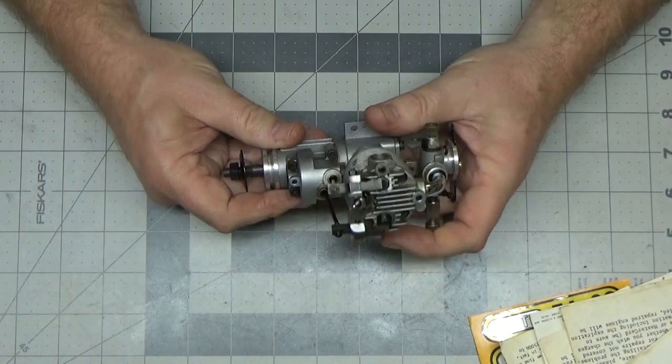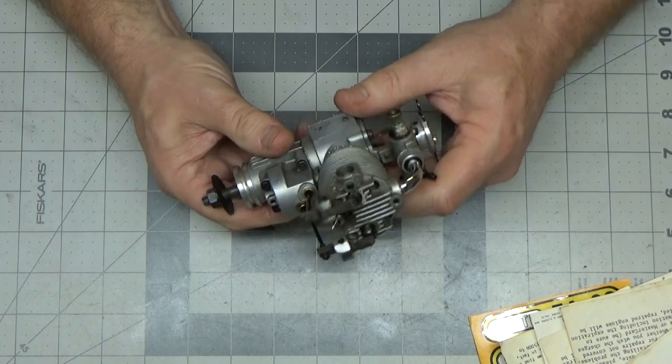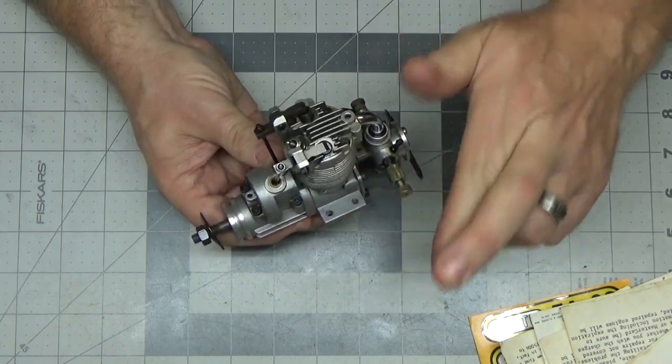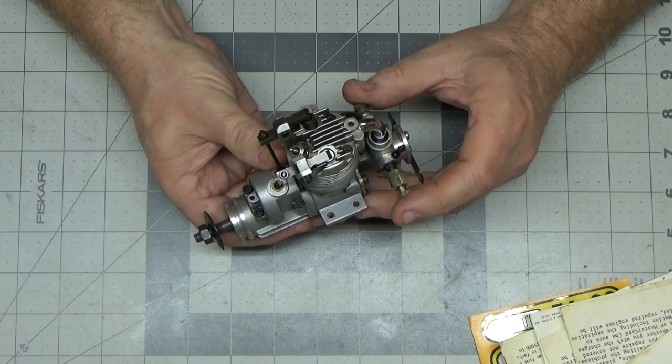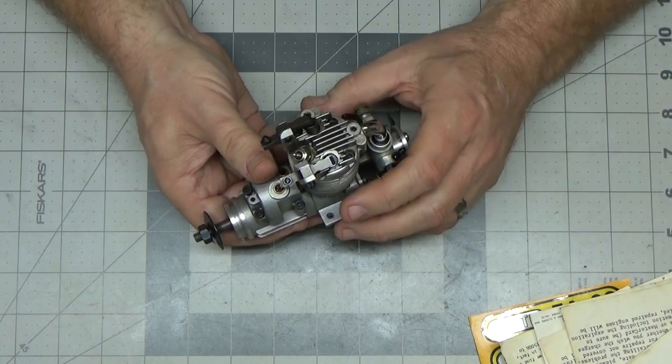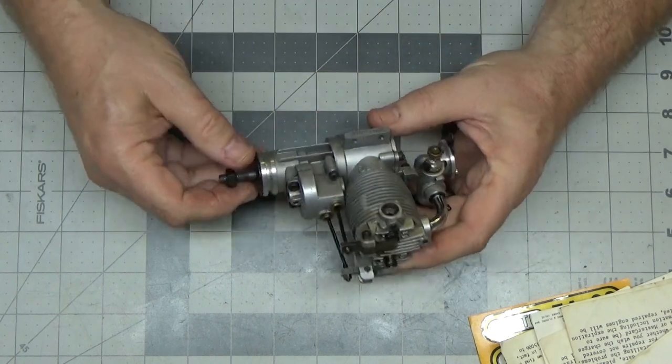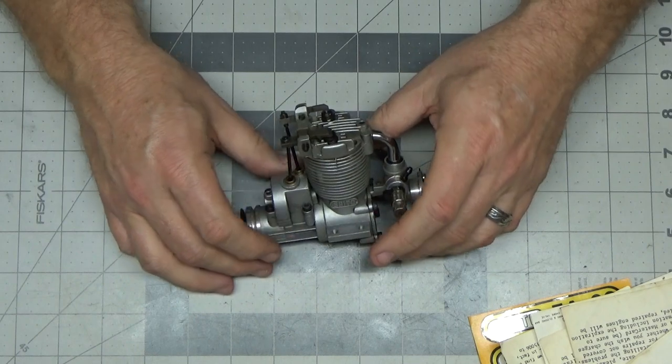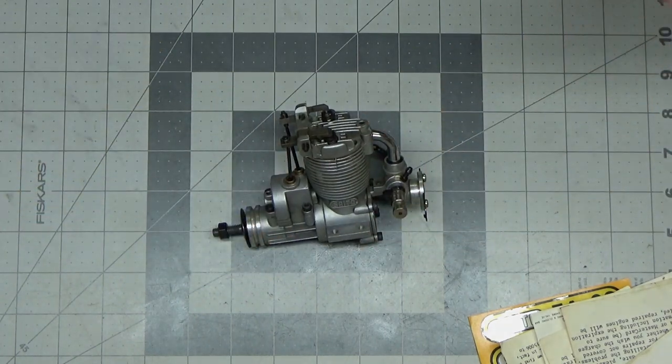That has been a quick look, maybe not so quick because of my rambling, of this Saito FA30 engine which I hope runs much better than the Saito FA40 engine that I had a year and a half or so ago. But we'll find out I guess here soon or whenever I get around to getting this on the stand. But thank you for watching and stay tuned for some more videos concerning this engine. I'll see you next time.